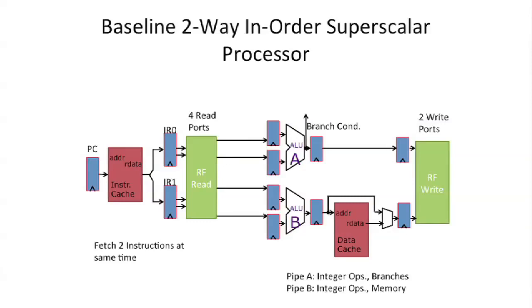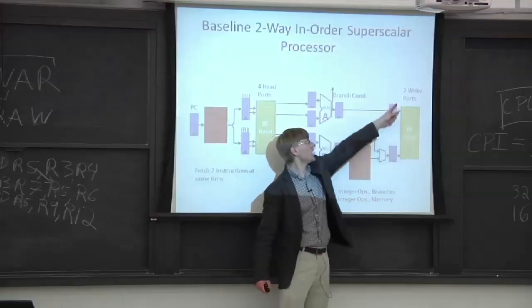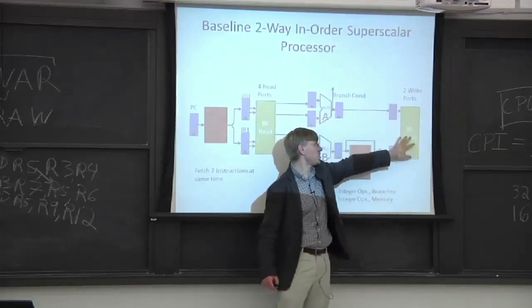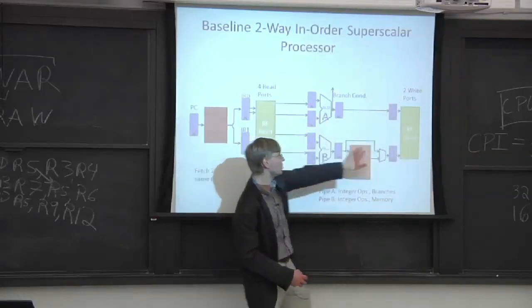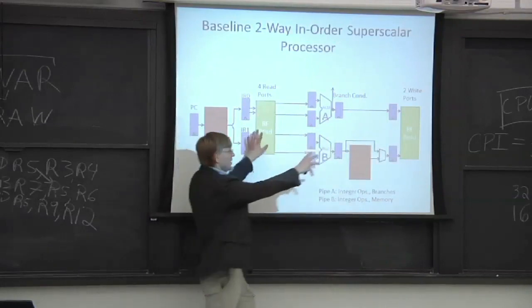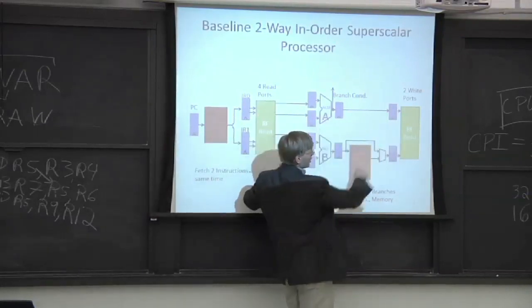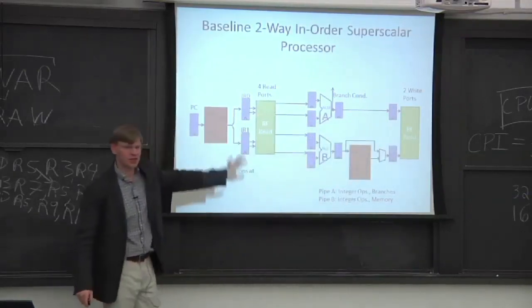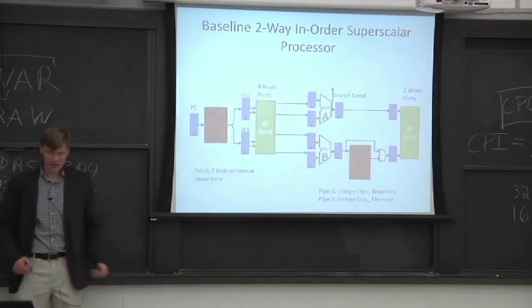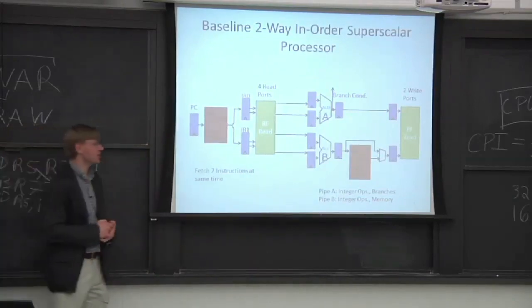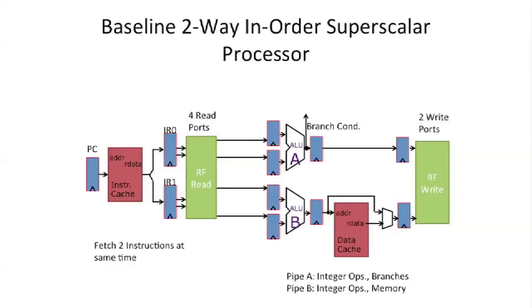And if we want to be able to retire or commit instructions two at a time, we need to add more write ports. So I show the register file here sort of split into two. But the register file is together, but logically I just drew it apart so you could actually make heads and tails with the drawing. So that's something interesting to think about.